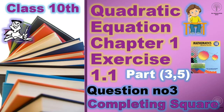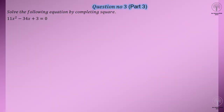Hello dear students, this is Rebecca Deel from RA Knowledge Board. We are going to do question number 3 of exercise 1.1. There are two more parts — part 3 of question number 3 is completing the square. The question in front of you is 11x squared minus 34x plus 3 equals 0, as you have done in the previous video.